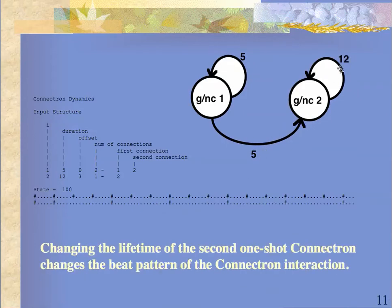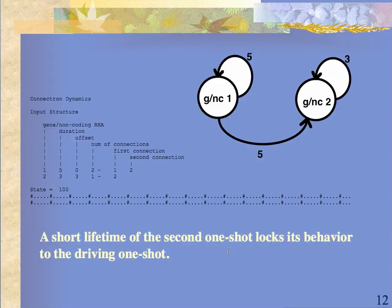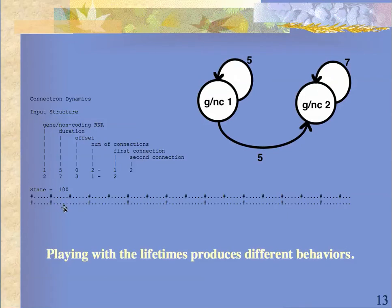If you change this constant from ten to twelve, the syncing is going to be different — a longer syncing because of the way the two things are beating against each other. If the periodicity is less here, the second is going to be synced to the first, producing the behavior we saw before. Change it to seven, and you get a different sort of thing. Each time you play around with this constant, you're going to get different forms of behavior.